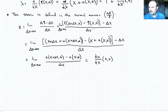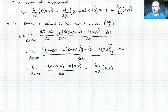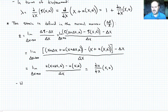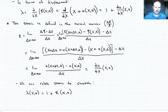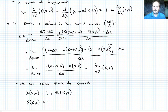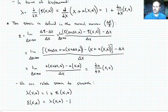We can now relate strain to the stretch ratio. The strain is ∂U/∂X, and from our stretch ratio expression, lambda = 1 + ∂U/∂X. So lambda (a function of X and T) equals 1 plus the engineering strain (also a function of X and T). Or solving for strain: epsilon = lambda(X, T) minus 1.